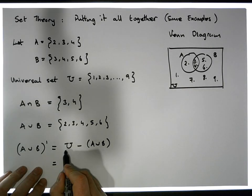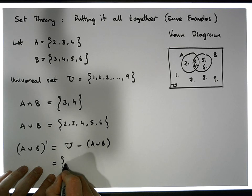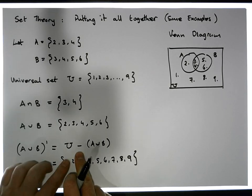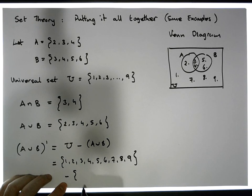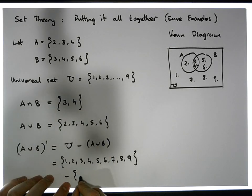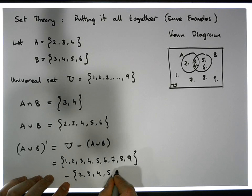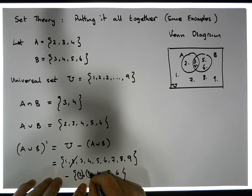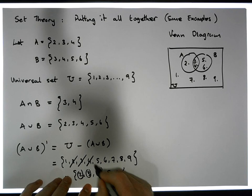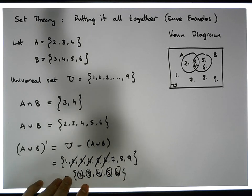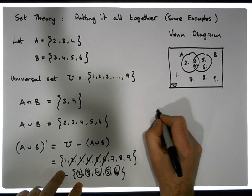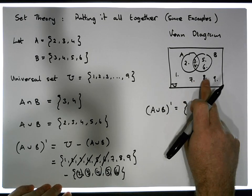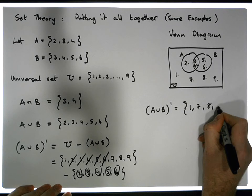So: the universe is {1, 2, 3, 4, 5, 6, 7, 8, 9}, and we subtract A union B, which is {2, 3, 4, 5, 6}. Taking those values out, what's left behind — the complement of A union B — is equal to the set {1, 7, 8, 9}.